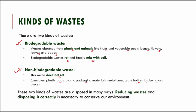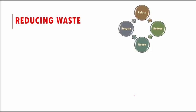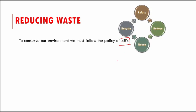These two kinds of wastes are disposed of in many ways. Reducing waste and decomposing it correctly is necessary to conserve our environment. To do so, we must follow the policy of the four R's — and this is the golden rule. The four R's are: refuse, reduce, reuse, and recycle. These are the four golden rules of our life to save our environment.